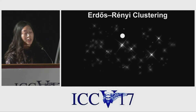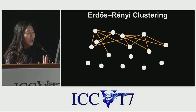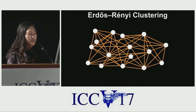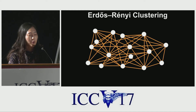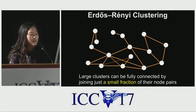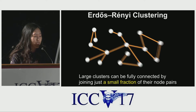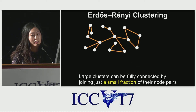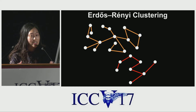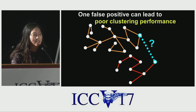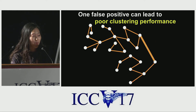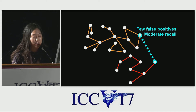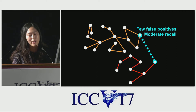Let's say each tracklet is represented by a node. We want to connect all the nodes from the same identity. According to the Erdős–Rényi random graph model theory, large clusters can be fully connected by joining just a small fraction of their node pairs. However, a single connection between two different identities can lead to poor clustering performance. Therefore, we need a verification system which will give us very few false positives but perhaps moderate recall.